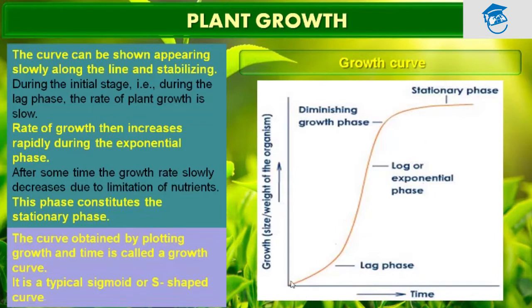The curve obtained by plotting growth against time is called the growth curve. When we plot time on the x-axis and growth — which is size or weight of an organism — on the y-axis, the resulting curve is known as the growth curve. It is typically a sigmoidal or S-shaped curve, as seen in plants.